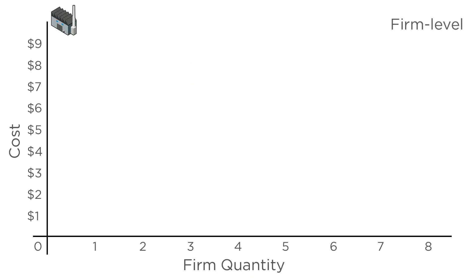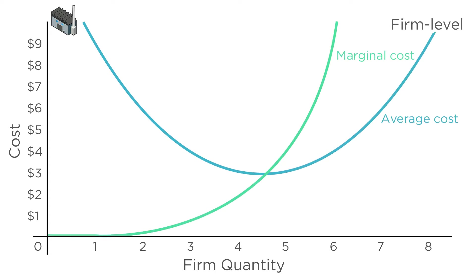Two lectures ago, we explored the cost graph in our graphical supplement. We graphed average cost as a U-shape, and we also graphed marginal cost as increasing as you produce more units, with the marginal cost curve crossing average cost at the bottom of the U.